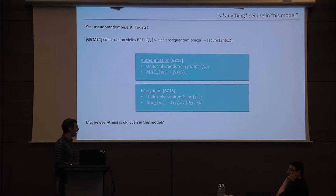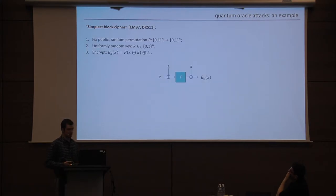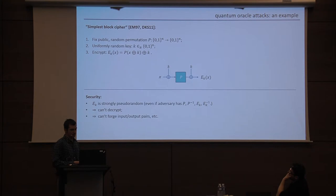Okay, so then you might say, well, maybe everything is okay. Maybe classical access against quantum adversaries is the same as quantum access against quantum adversaries. That turns out not to be the case, somewhat dramatically. So let's look at this simplest block cipher, which is a variant of Evan Mansour with a single key. So here we have a public random permutation P, and to turn it into a private permutation, we select a uniformly random key, and then we encrypt by extorting the key into the plaintext, applying the permutation, and then extorting in the key again. So this is a strongly pseudorandom permutation. Classically, you can't decrypt, you can't forge, and so on and so forth. So this is a good block cipher.